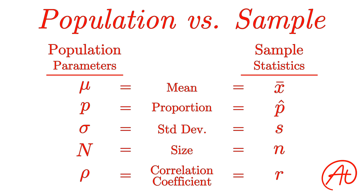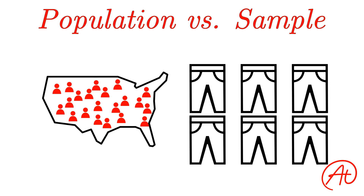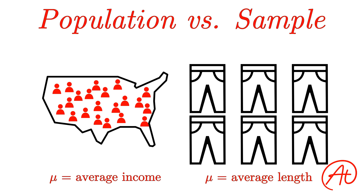Now that we went over populations and samples and how they're different, let's quickly talk about how they're used. Normally, when we use the different methods we learn in stats, we usually want to figure out some information about our overall population. As an example, we might want to find the average income for people in our country. Or we might want to find the average length of pants we manufacture. However, if our population is really, really large, it can be difficult to collect income data on every single person in our country, or measure every single pair of pants that you make.